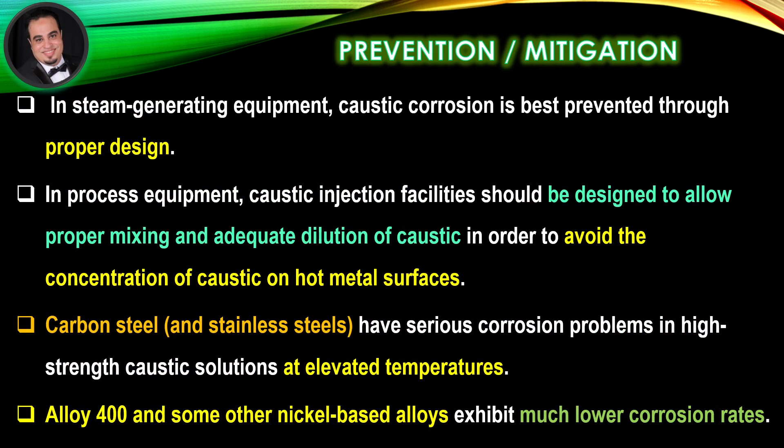Prevention and mitigation: In steam generating equipment, caustic corrosion is best prevented through proper design. In process equipment, caustic injection facilities should be designed to allow proper mixing and adequate dilution of caustic, in order to avoid the concentration of caustic on hot metal surfaces. Carbon steel and stainless steels have serious corrosion problems in high-strength caustic solutions at elevated temperatures. Alloy 400 and some other nickel-based alloys exhibit much lower corrosion rates.